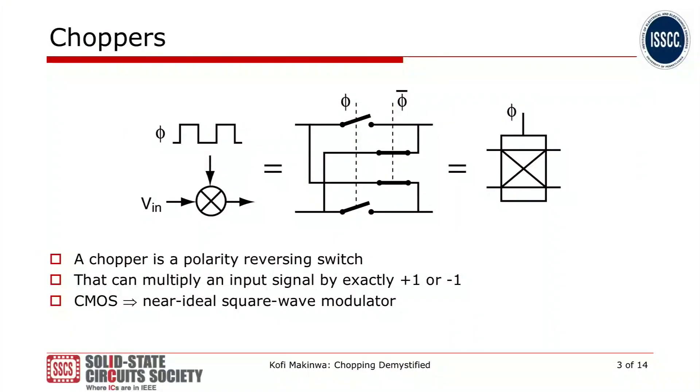At the heart of the chopping technique lies a simple component known as a chopper. A chopper is just a fancy word for a polarity-reversing switch. As such, a chopper — you can see that in the center of your slides — is able to multiply an analog input signal, like Vin, by plus one or minus one. And because we can realize switches pretty ideally in CMOS technology, basically a chopper gives us the possibility of making a near-perfect square wave modulator.